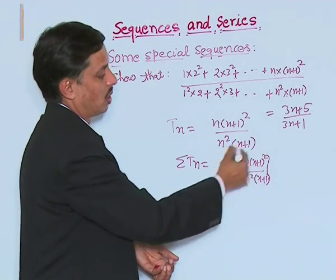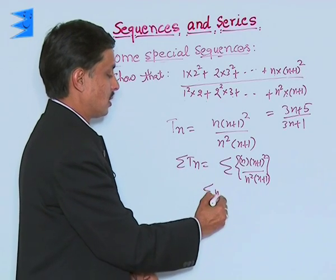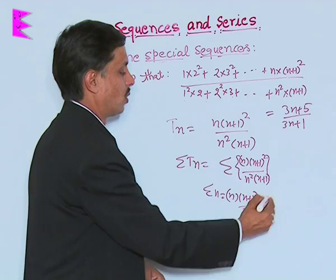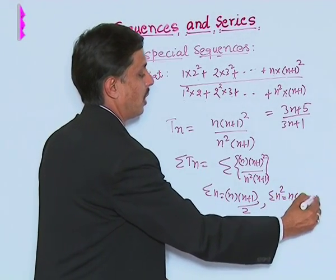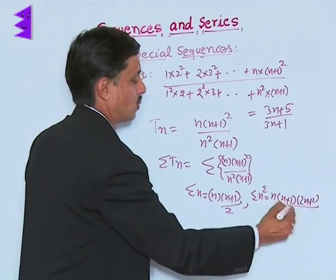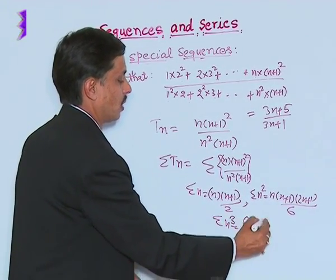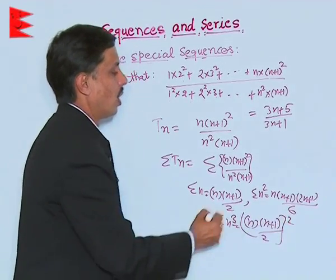After simplification of this and using the special results sigma n equals to n into n plus 1 upon 2, sigma n square equals to n into n plus 1 into 2n plus 1 upon 6, and sigma n square equals to n into n plus 1 upon 2 whole square, we will get this simplification as 3n plus 5 upon 3n plus 1.